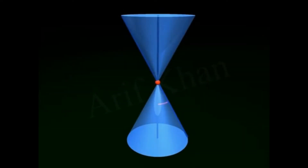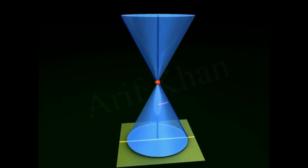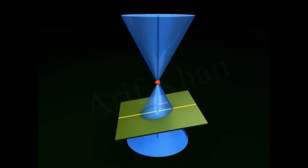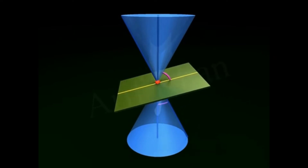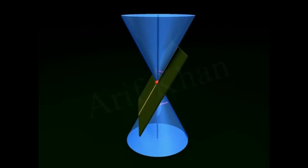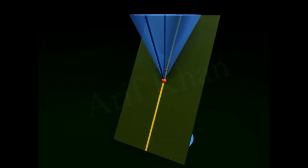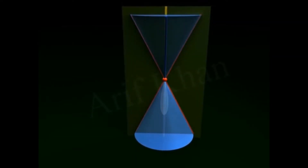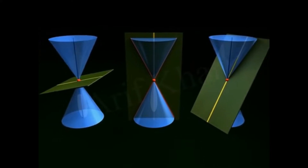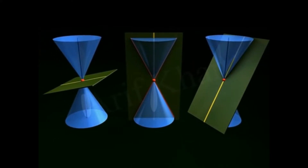Degenerate conics: If the plane intersects the double-right circular cone at its vertex, the ellipse becomes a point, the parabola becomes a line, and the hyperbola becomes two intersecting lines. The figures so obtained are called degenerate conics.